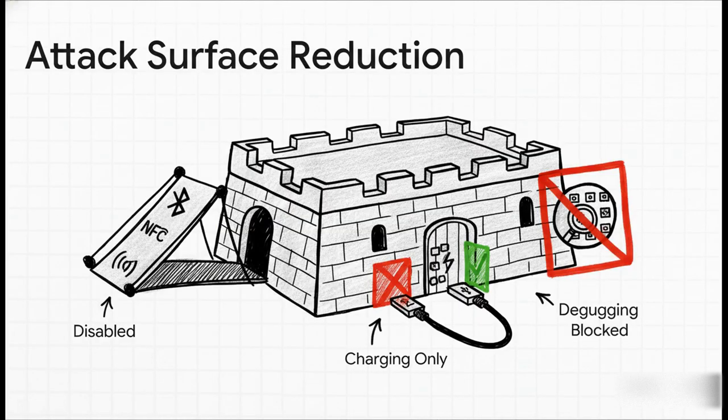A core philosophy of GrapheneOS is aggressive attack surface reduction. The idea is simple: the most secure code is the code that never runs. Features like NFC and Bluetooth are disabled by default — you have to explicitly enable them. Even more critically, when the device is locked, the USB-C port defaults to a charging-only mode. And this isn't just a software toggle; it disables the data lines at the hardware controller level, providing a robust defense against things like malicious charging stations or forensic tools.